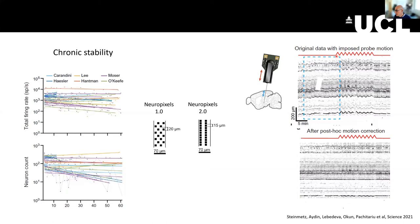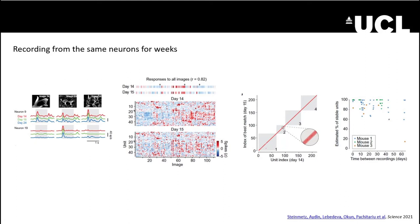Something else we can do is follow the exact same neurons for days and days. Anna Lebedeva showed this by recording from neurons in primary visual cortex, where different neurons respond to different combinations of images — neuron 9 responds to images 34 and 19, neuron 19 only responds to image 69, and so on. You create a fingerprint for every neuron and check if that fingerprint changes day after day. We found we could go 30 or 50 days and find the same neurons, though the number decreased somewhat.